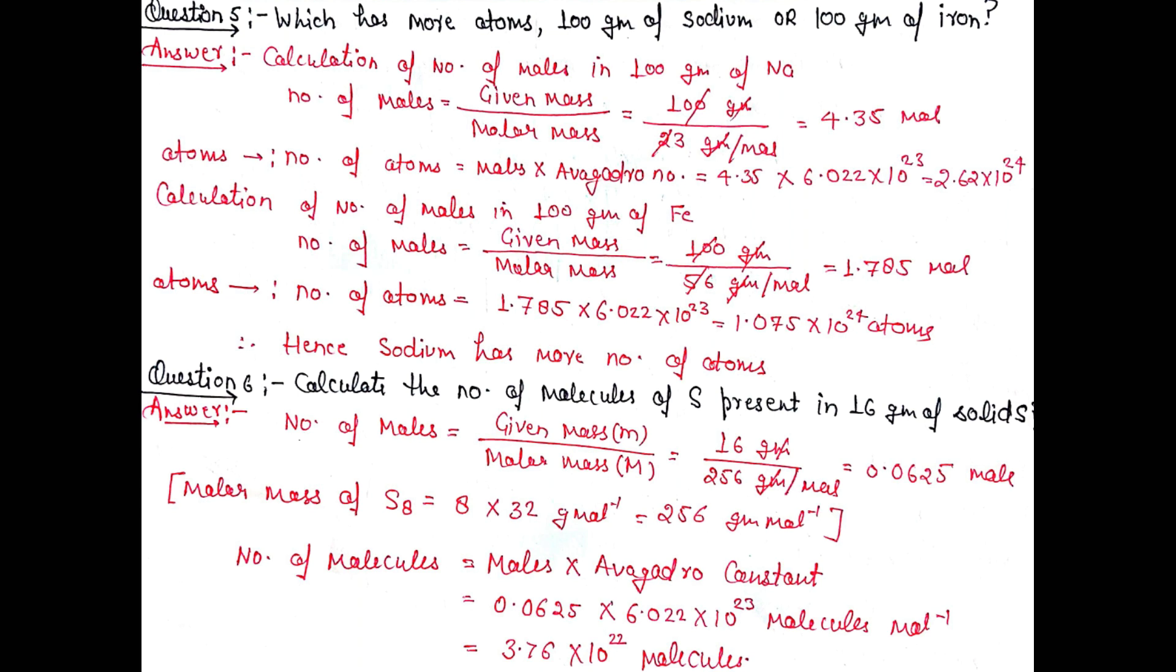Using the formula mass multiplied by Avogadro's number, we calculate the number of atoms as 2.62 × 10^24 atoms in the case of sodium. Part 2: For 100 grams of iron, similarly calculating the number of atoms, we will find that sodium has more number of atoms.